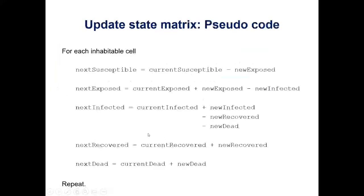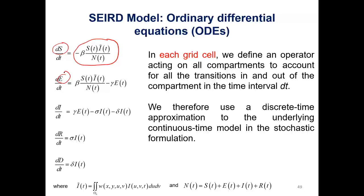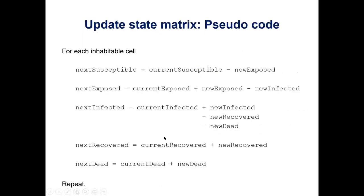In pseudocode, you have an adjacency matrix: the next susceptible equals the previous susceptible minus new exposed, and so on, maintaining equilibrium. We define an operator acting on all compartments to account for transitions in and out in a given time interval dt, using a discrete time approximation to the underlying continuous time model in the stochastic formulation. The only stochasticity introduced is in the random Poisson draw — the same quantity is removed from the susceptible compartment and added to the exposed compartment.